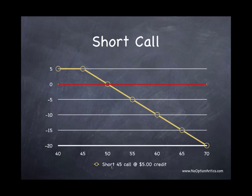Here's a picture of a short $45 call, meaning that we sold the right for someone else to buy stock at $45. We have received a $5 credit, meaning the person paid us $5 for them to have the right to buy the stock. So we take that credit in. So the most we can make here, as we can see by the risk graph, is the $5 that we have taken in.